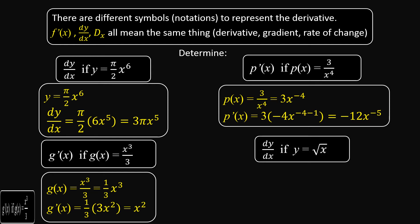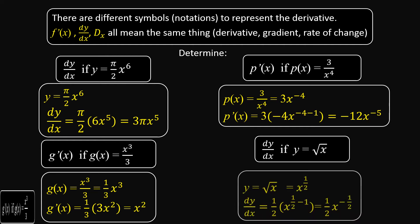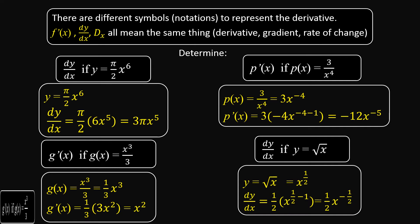Find dy/dx if y = √x. We write √x in exponential form as x to the power ½. Then we apply the rule: the answer is ½ times x to the power ½ minus 1. Use your calculator — ½ minus 1 is −½. So dy/dx = ½x⁻½.